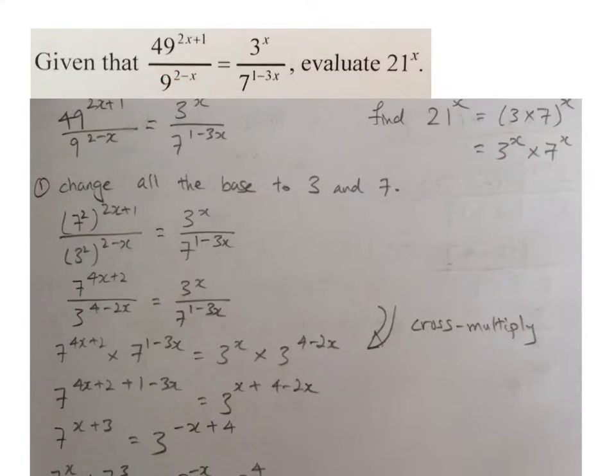So I start off the question by writing down the question first, and we are asked to find 21 to the power of x. Using the law of indices, I can actually split my 21 to be 3 times 7, and this is actually 3 to the power of x multiplied by 7 to the power of x. So bear in mind that 21 to the power of x is actually 3 to the power of x multiplied by 7 to the power of x.